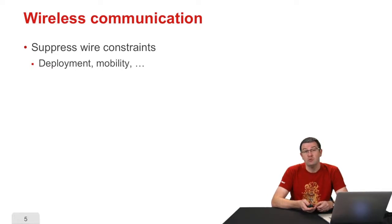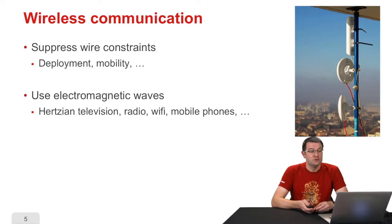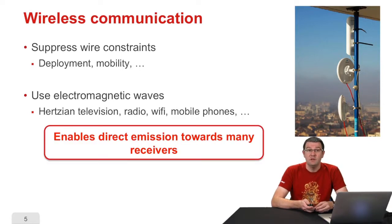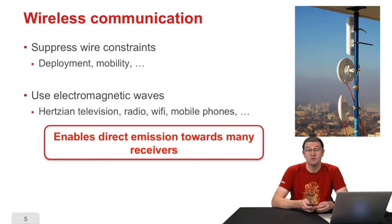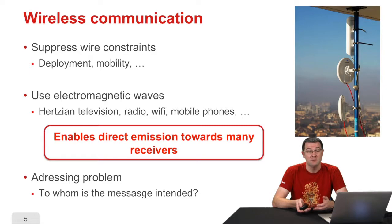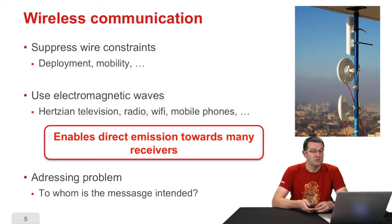Wired communication is convenient but has many constraints, particularly for deployment since cables need to be pulled inside buildings, and it limits mobility since being connected to a wire makes it harder to move freely. Wireless technologies are very much used nowadays — electromagnetic waves are used to transmit information, including television, radio, and mobile phones. The big difference is that a transmitter can broadcast towards many receivers. With a wire, there is only one receiver at the end of the line. With wireless, waves spread everywhere around us, so several people can receive it. That's a problem because you need to send a message to a specific person. Some addressing is needed — adding information to the message that says who the message is for. Because of that, there are constraints imposed on network protocols.